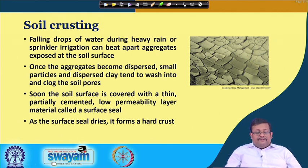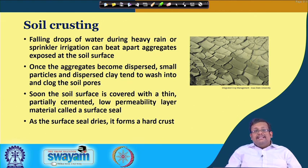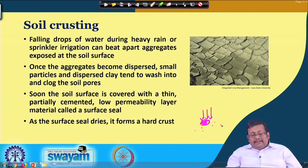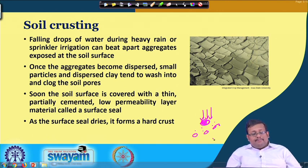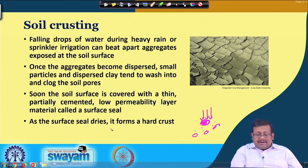Another important unfavourable condition for soil is called soil crusting. Soil crusting generally occurs due to the beating action of falling raindrops. Falling drops of water during heavy rain or sprinkler irrigation can break apart aggregates exposed at the soil surface. Due to the beating action of falling rainfall, these aggregates break down and produce individual particles. Once the aggregates become dispersed, small particles and dispersed clay tend to wash into and clog the pore space. Once it clogs the soil pores, the soil surface is covered with a thin, partially cemented, low-permeability layer called a surface shield. If the surface shield dries, it forms a hard crust — that is called soil crusting.